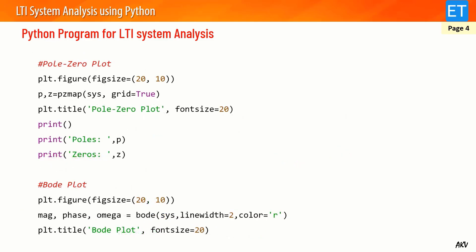For the pole-zero plot: initialize figure size 20×10, then use 'pzmap' — the same function as in MATLAB. All poles go into p and all zeros go into z. Once executed the plot is created automatically, I just add a title and print the poles and zeros values in the Python console.